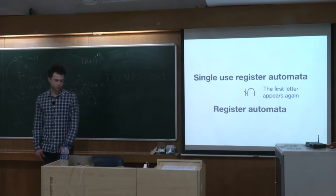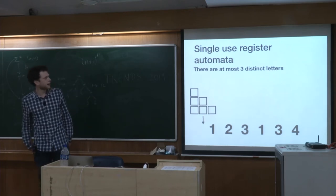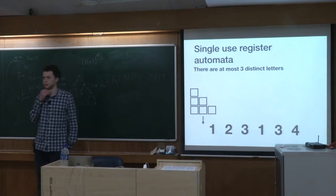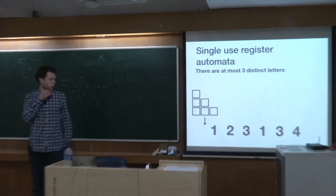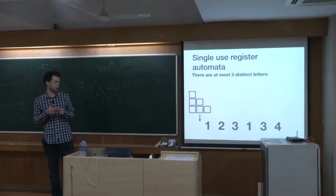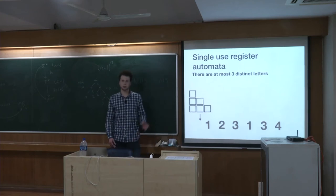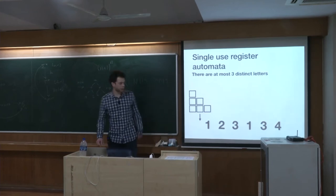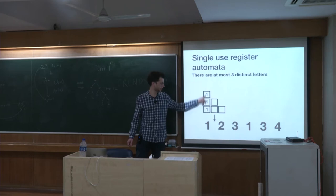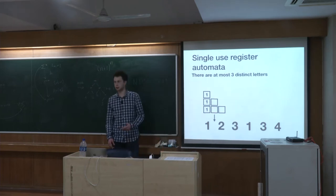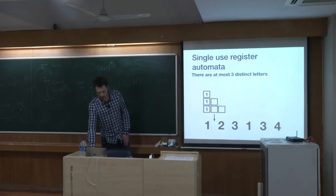It is not that bad, because we can, for example, recognize the language 'there are at most three distinct letters.' The first idea for this language also seems to fail because we can store the first letter in the first register, but once we know it is different, we lose it and have no idea what was there in the first place. So we do a slightly more involved construction that still works with the single-use restriction. For this we need six registers, and the convention is that everything in one column will start with the same value — just multiple copies — because it is important to count the values. We may need to store multiple copies of some values.